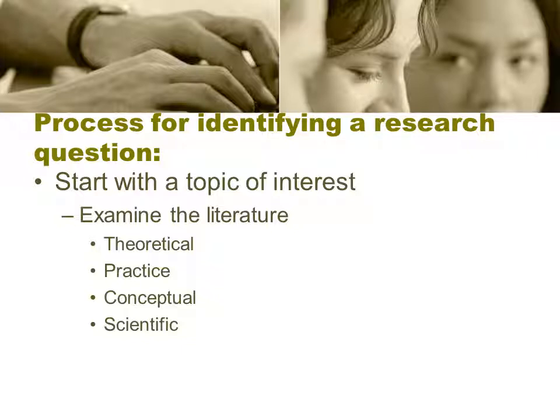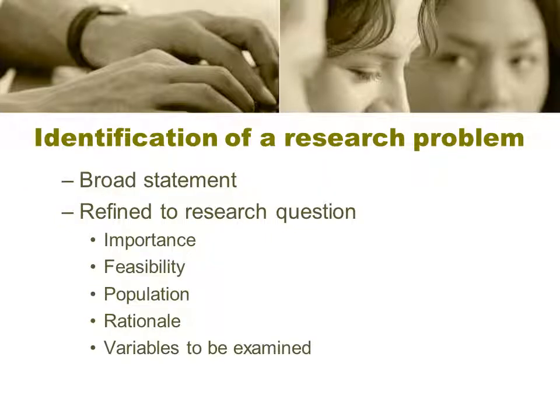Your process for identifying a research question is to start with a topic of interest, examine the literature — including the theoretical, practice, conceptual, and scientific literature — and then come up with a broad statement. It is then refined to the research question through the process of looking at importance, feasibility, the sample population available to you, the targeted sample population, your rationale for trying this particular approach, and the variables you want to examine.